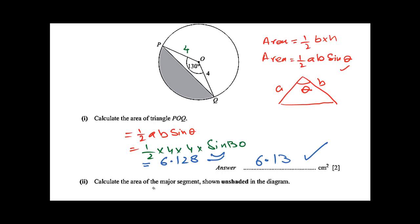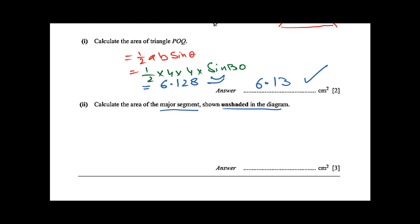Part 2: calculate the area of major segment, very important term, shown unshaded in the diagram. So first of all, we have segment and sector concept identified.